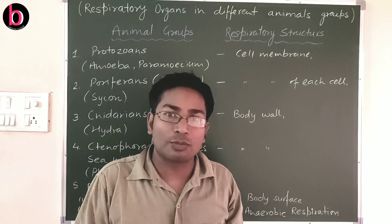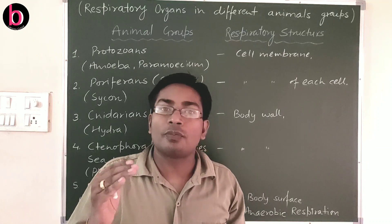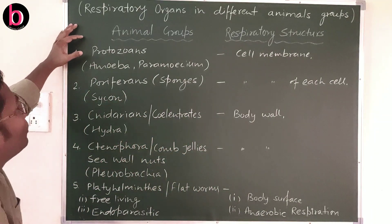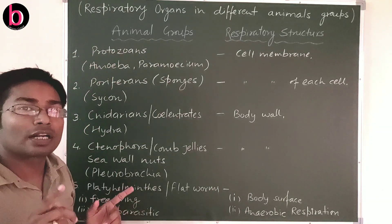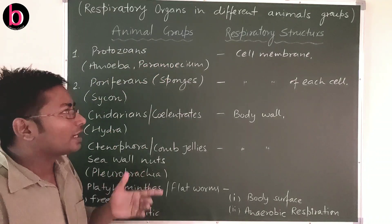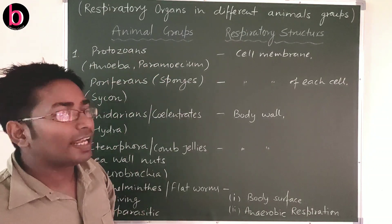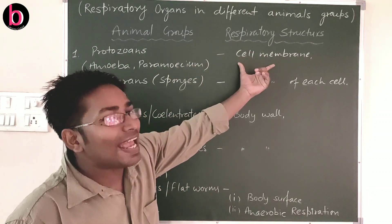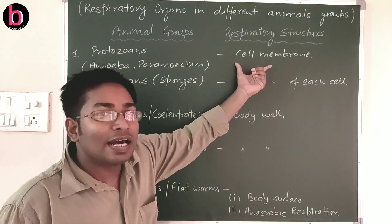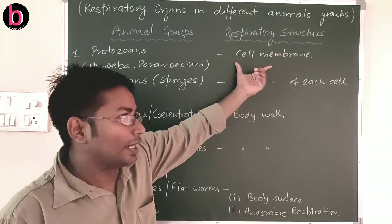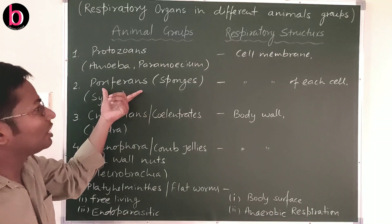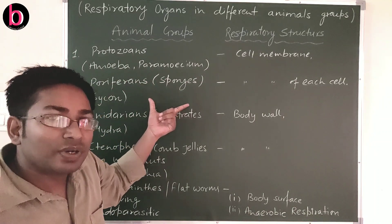We also include one phylum from Kingdom Protista, that is Protozoa. Protozoans are unicellular eukaryotic animals — examples are Amoeba and Paramecium. Because they have a single cell, their respiratory activities occur through the cell membrane, also known as plasmalemma or plasma membrane.